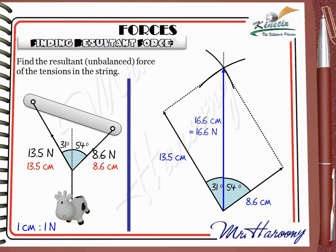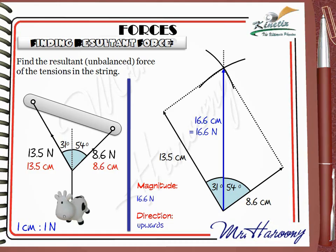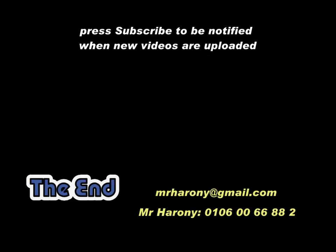No need to measure the angles, because our resultant force is clearly directed upwards. The resultant unbalanced force is 16.6 N, direction upwards.